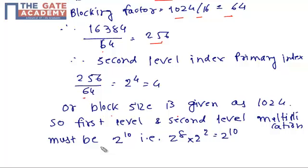Alternatively, since block size is 1,024 bytes (2^10), the first and second level multiplication must be 2^10, which equals 2^8 × 2^2 = 256 × 4.